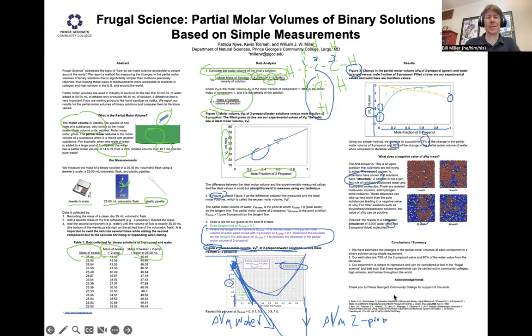In conclusion, we have estimated the changes in the partial molar volumes of each component of a binary solution using simple equipment, simpler than usually is done. Usually they use something called a pycnometer, they use a hot water bath as well, and they use a scale that has many more, or at least two more digits, two more significant figures than ours. Number two, our experiments do a good job though not perfect when we compare our values to literature.